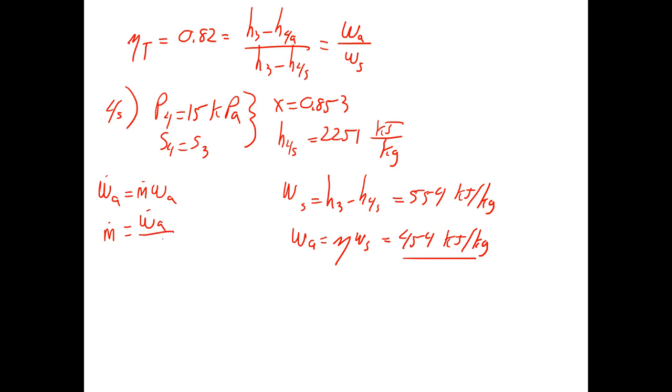If we were to solve for that, we would get our 10 MW, or 10,000 kW, divided by our 454 kJ/kg. That would give us a necessary mass flow rate of 24.5 kg/s. That's the required mass flow rate.